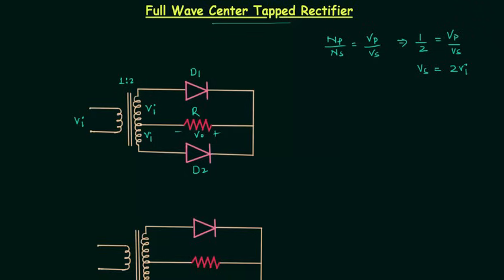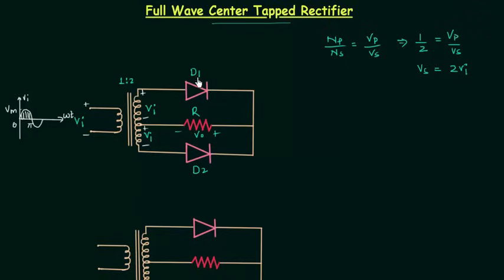I will analyze this circuit for the positive half cycle, from 0 to Pi. The peak voltage is Vm, and in the positive half cycle the polarity is plus and minus. So here we have plus, minus, plus, minus. Diode D1 will be forward biased because the direction of the arrow is similar to the direction of current. The positive terminal drives current in this direction, so diode D1 is forward biased.